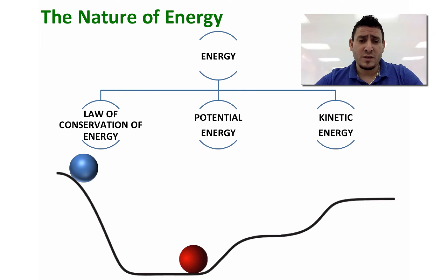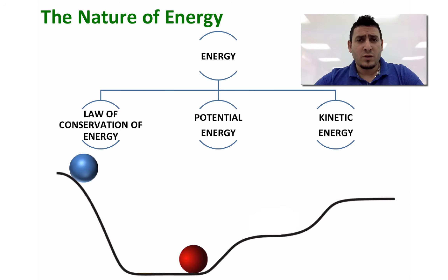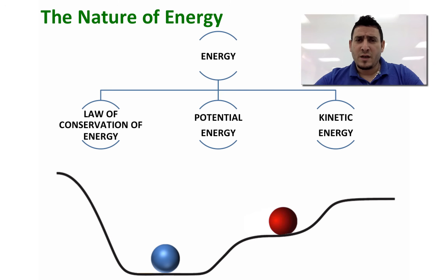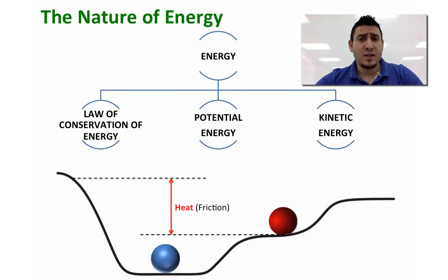Let's discuss this example where we have the blue ball at a higher position than the red ball. The blue ball possesses potential energy due to its position. If the blue ball rolls down the hill, it's going to transfer some of its energy to the red ball, and therefore the red ball will be able to go to a higher level. However, the level reached by the red ball is going to be lower than the initial level of the blue ball, due to the loss of energy from the blue ball due to friction with the surface.